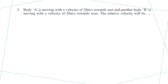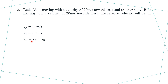Body A is moving east and body B is moving west. The relative velocity is to be found. Velocity of A equals 20 meters per second, velocity of B equals 20 meters per second. Since they are moving in opposite directions, the relative velocity is obtained by adding the two velocities. If they were in the same direction, they would be subtracted.